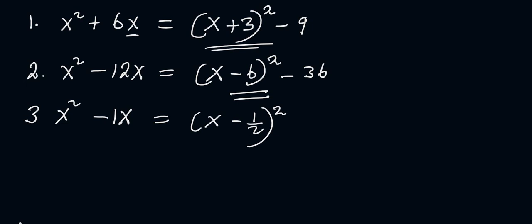Negative one-half squared gives us positive one-quarter. So by the time we subtract that from this, it's going to give us minus one-quarter. And this is now the final answer.